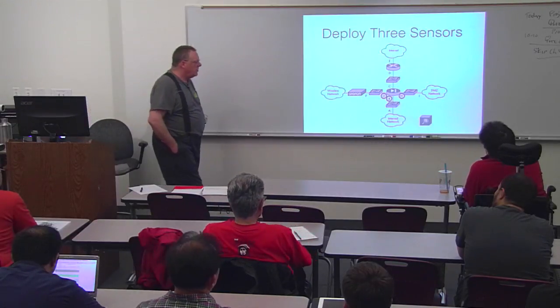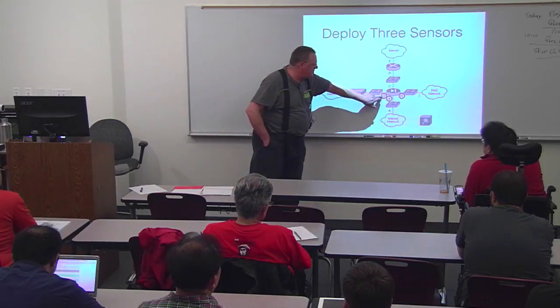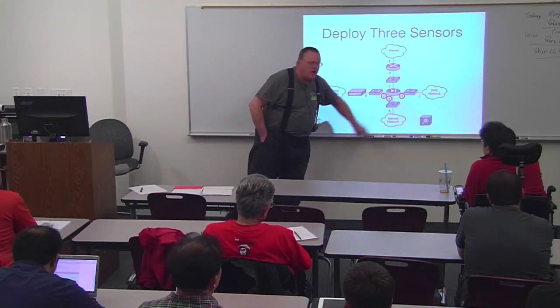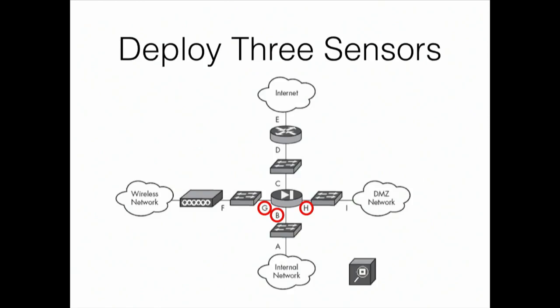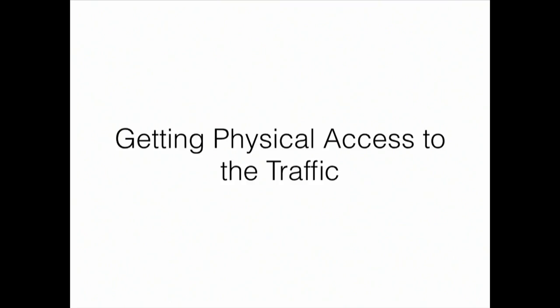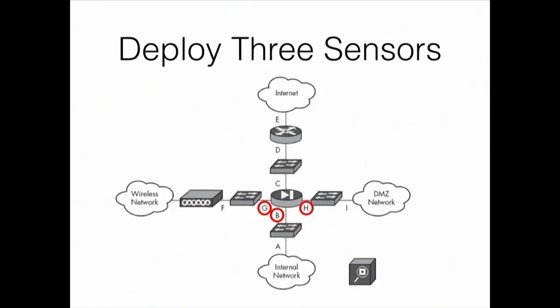Here's a better solution: you just deploy three sensors on the inside before network address translation. You harvest all the traffic coming from all three segments and have three channels coming in. Now you will have the real address of every device and you'll still see all the traffic generated from any part of the network. You just have to figure out how to handle it once you've got a data analysis tool, but this is a pretty good option.